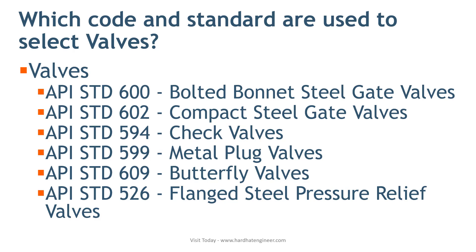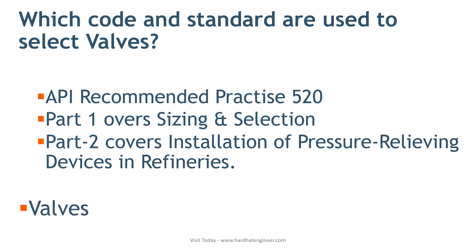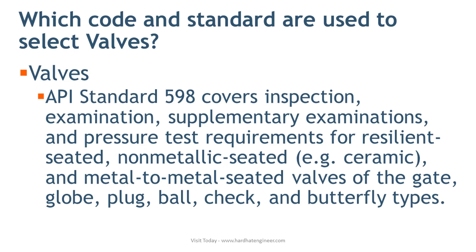API standard 526 covers flanged steel pressure relief valves. API Recommended Practice 520 Part 1 covers sizing and selection, and Part 2 covers installation of pressure relieving devices in refineries. API standard 598 covers inspection, supplementary examination, and pressure test requirements for both resilient seated and metal-to-metal seated gate, globe, plug, ball, check, and butterfly valves at the valve manufacturer's plant.